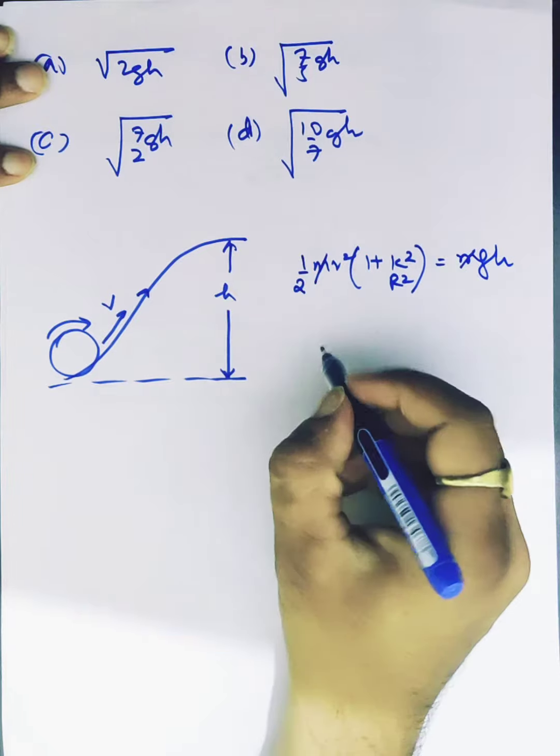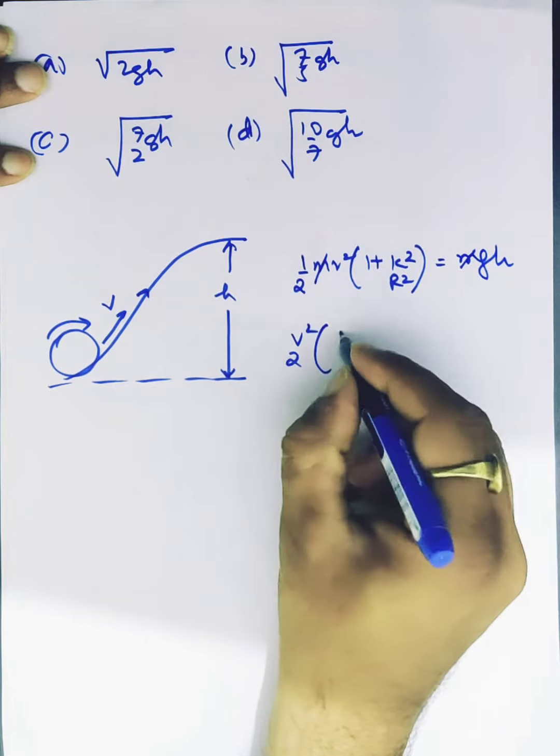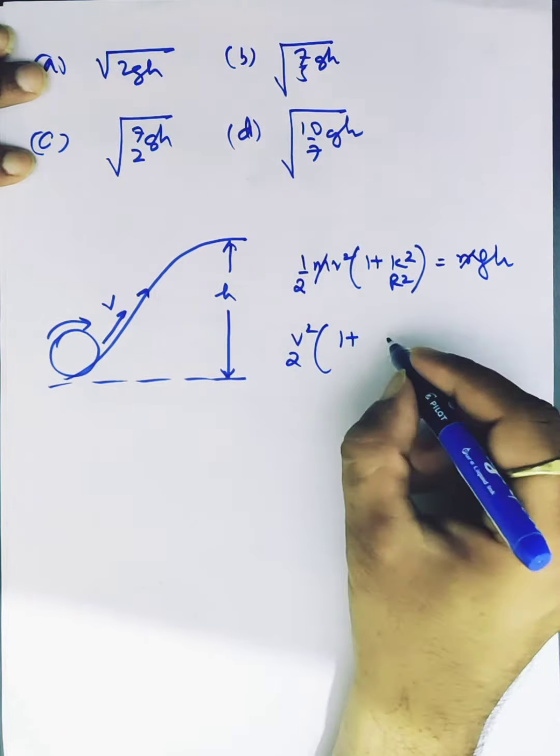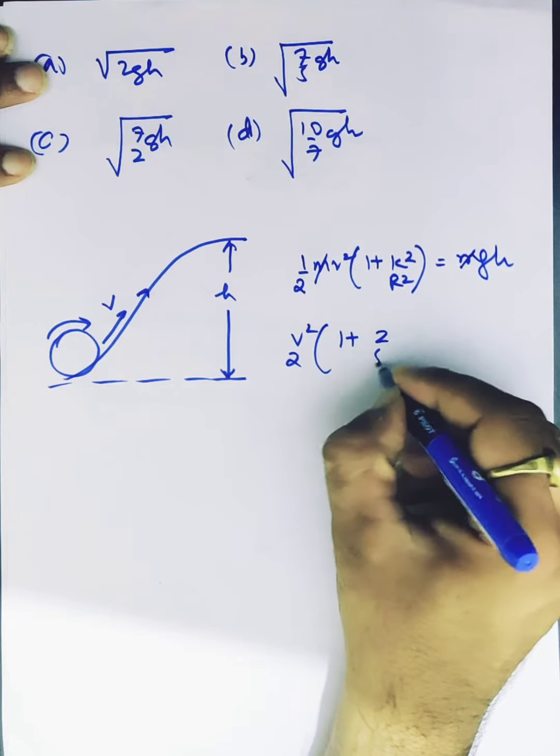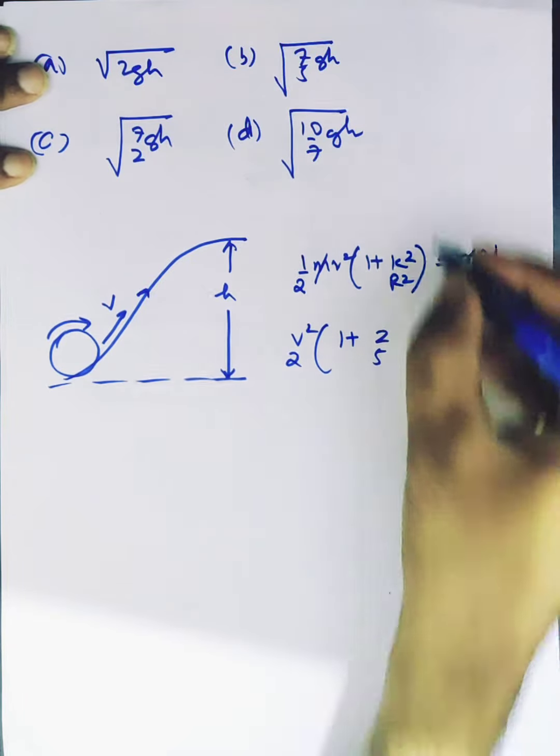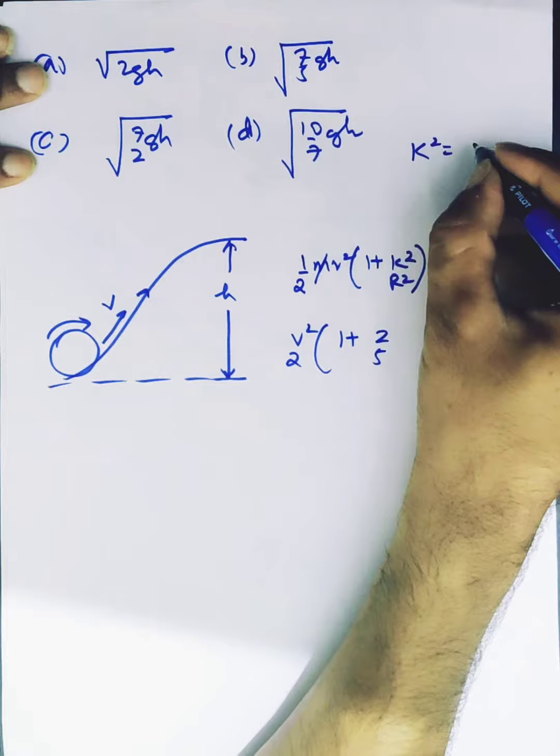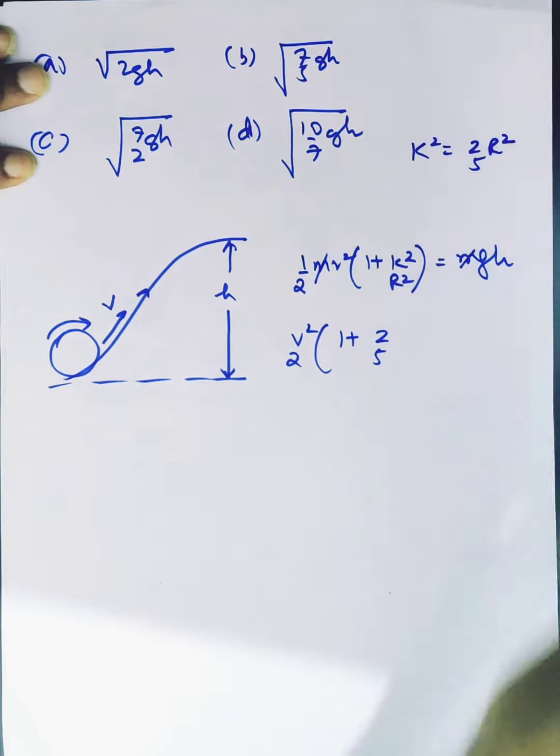m will be cancelled, so v²/2. This is a solid sphere, so k² is 2/5. In the case of a sphere, k² equals 2/5 r², so r² will be cancelled.